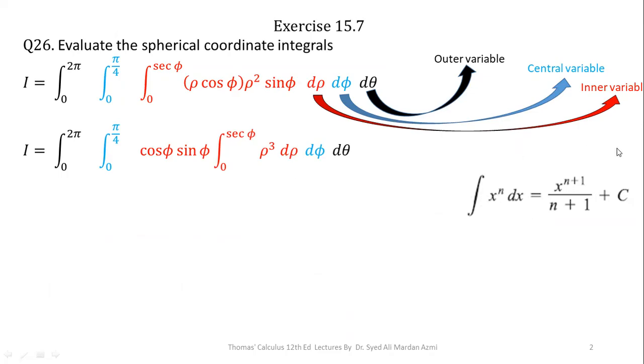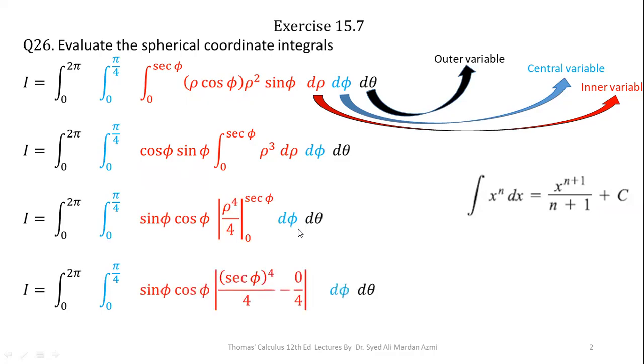Next, I can apply this formula: integral of x raised to power n dx is equal to x raised to power n plus 1 over n plus 1 plus c on this integral. So I have the integration of rho cubed as rho raised to power 4 over 4. In the next step applying the limits, we have sec raised to power 4 over 4 minus 0 over 4.